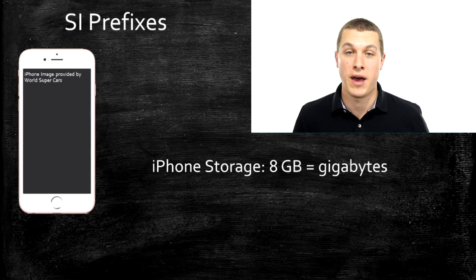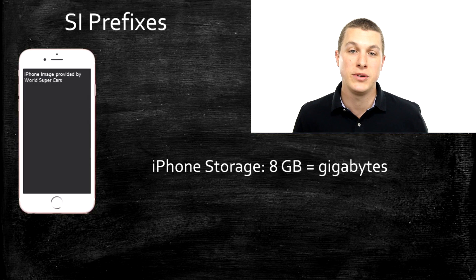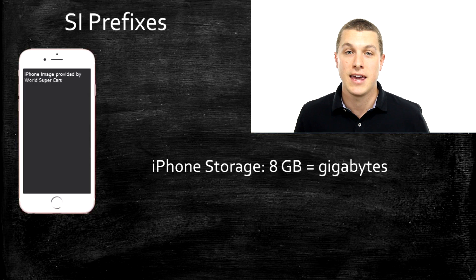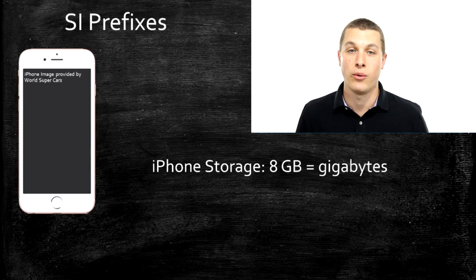At some point we've all looked at the back of our phones and seen something like 8, 16, 32 GB. It turns out that GB stands for gigabytes, which is a measurement of how much data your phone can store. Giga is actually something we call an SI prefix, and today on Real Chemistry we're going to be talking about what these SI prefix things are.